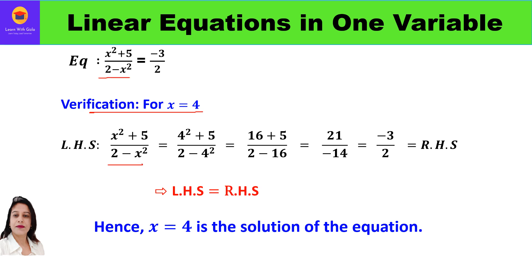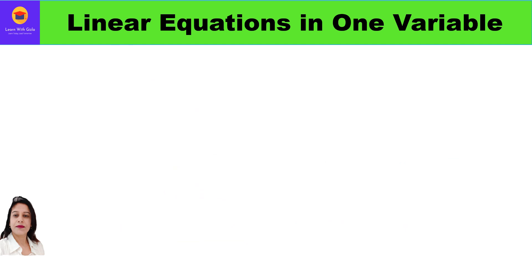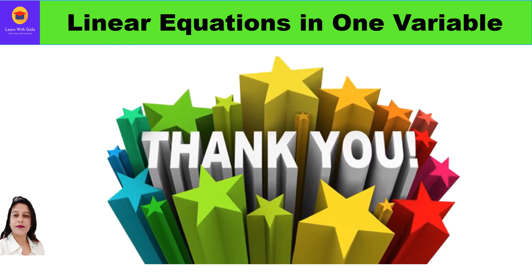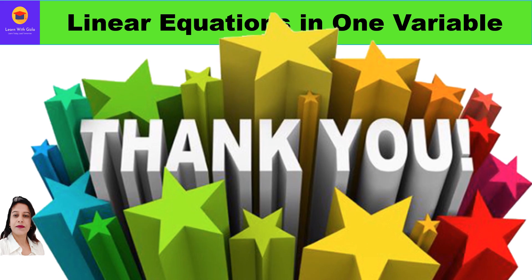For verification, substituting x equal to 4 in the left-hand side: 4 squared plus 5 upon 2 minus 4 squared equals 16 plus 5 upon 2 minus 16 equals 21 upon minus 14. Dividing both by 7 gives minus 3 by 2, which equals the right-hand side. Hence left-hand side equals right-hand side, so x equal to 4 is the solution. That brings us to the end of this video. Hope you have understood all the concepts related to linear equations in one variable. Please like and subscribe the channel. Thank you, have a great day!